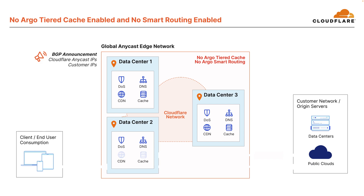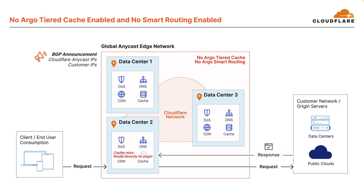Let's go through some different traffic flows to get a better understanding of how Cloudflare CDN works. First, let's take a look at Cloudflare CDN with standard caching and no Argo Tiered Cache or Smart Routing enabled. A request comes in to a data center closest to the client. Content is not cached, so a request is made to the origin server for the content. Once the response is received, the data center closest to the client caches the content and returns the response.